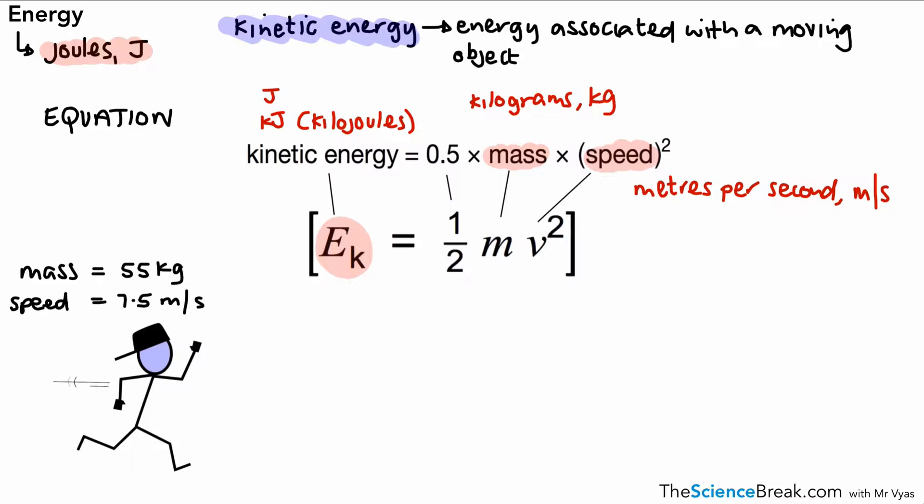So all we do is put our numbers into the equation—it's called substituting into the equation, which you might have learnt about in maths. It's a simple case of 0.5 times the mass, which is 55, times the speed, which is 7.5, and it's squared, so it's 7.5 times 7.5. You might want to use a squared button on your calculator.